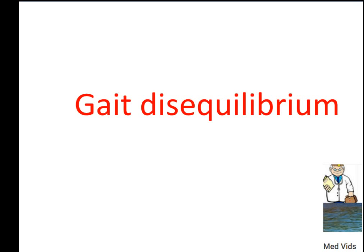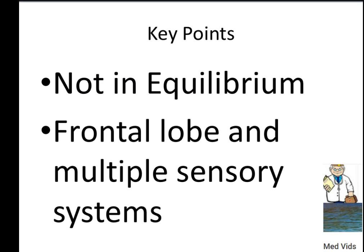Gait disequilibrium — disequilibrium means it's not in equilibrium or alignment. Key points: frontal lobe is affected and multiple sensory systems are involved. The most important thing to highlight is frontal lobe involvement with multiple sensory systems.